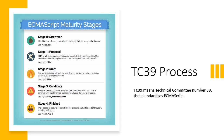Stage 0 begins with an ideation of a particular feature. Then it goes to Stage 1 where it is proposed and discussions happen. After that it moves to Stage 2, the Draft, where most things are finalized and the syntax is finalized.